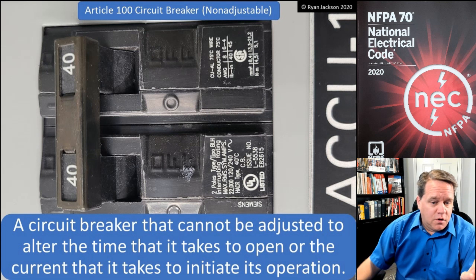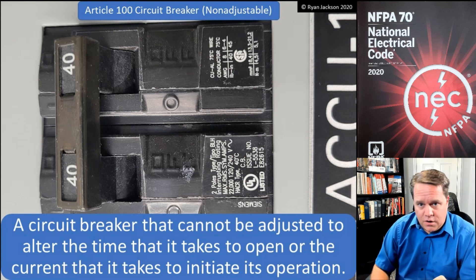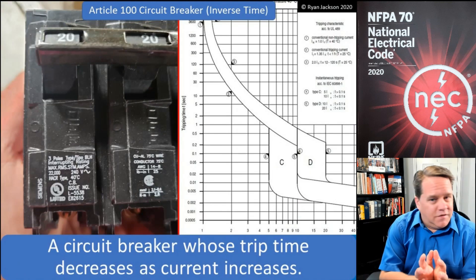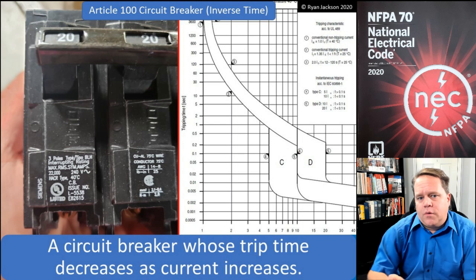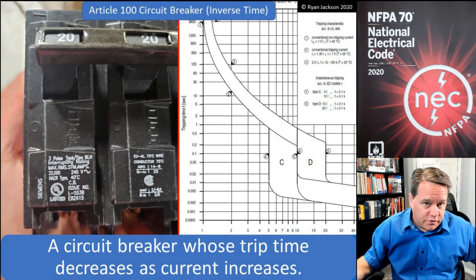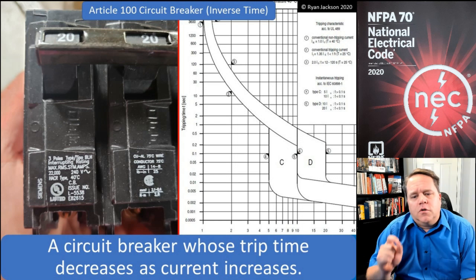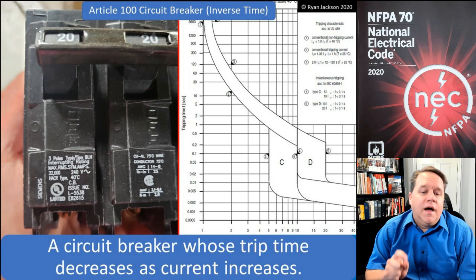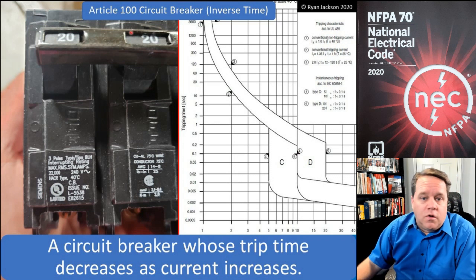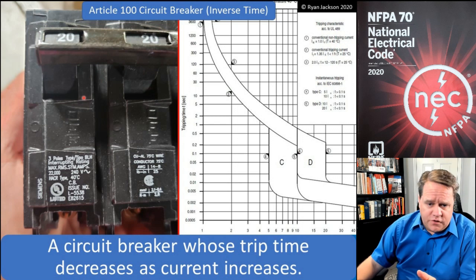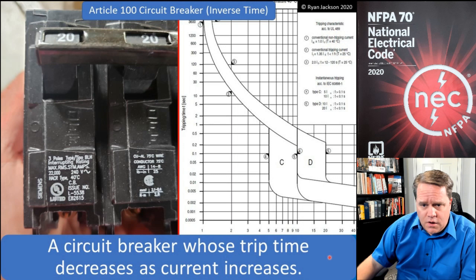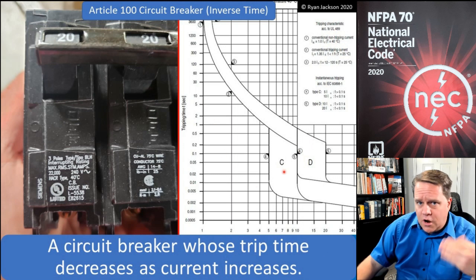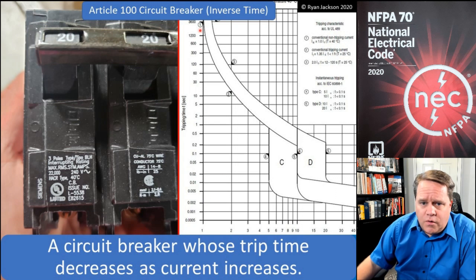A non-adjustable breaker — we cannot adjust the time it takes to open or the current that initiates that operation. The definition of an inverse time circuit breaker: it's a circuit breaker whose trip time decreases as the current increases. A regular molded case circuit breaker works on this principle. On the right we have an inverse time characteristic curve showing how fast it will open based on how much current it receives — time going up to down, current going left to right.